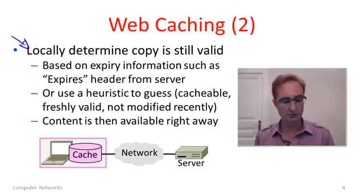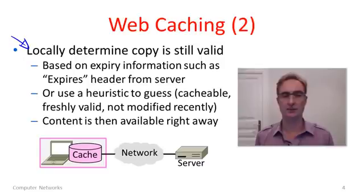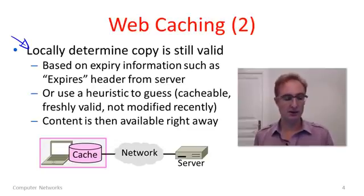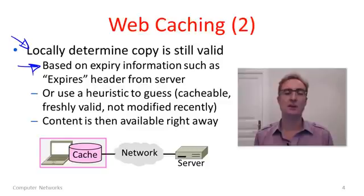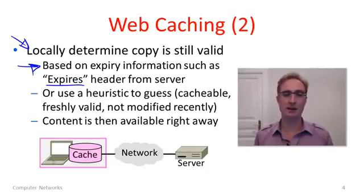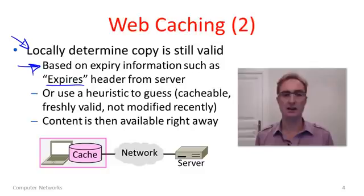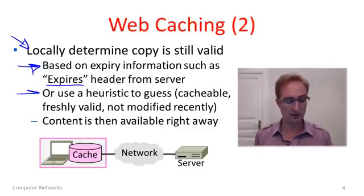The first option is to locally determine whether the content copy you have in your cache is still valid. Valid means it has the same contents as would be returned by the server if you requested it again. To do this we use meta information which came from the server when we retrieved it last time. For instance, if the server includes an expires header which gives a timestamp saying this copy of the content is valid until this date, our test is simply checking the time to see if the document has already expired. If it hasn't expired, it's good. This would be wonderful if there was always an expires header — there isn't.